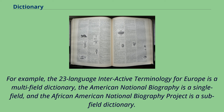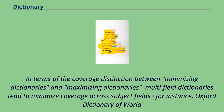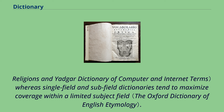Lexicographers categorize specialized dictionaries into three types. A multi-field dictionary broadly covers several subject fields. A single-field dictionary narrowly covers one particular subject field, and a subfield dictionary covers a more specialized field. For example, the 23-language Interactive Terminology for Europe is a multi-field dictionary, the American National Biography is a single-field dictionary, and the African-American National Biography Project is a subfield dictionary.